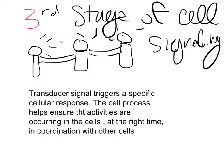Signal transduction is known as any process by which a biological cell converts one kind of signal or stimulus into another — a process by which a transducer converts one type of energy to another. This is the third stage of cell signaling. The transduced signal finally triggers the specific cellular response.